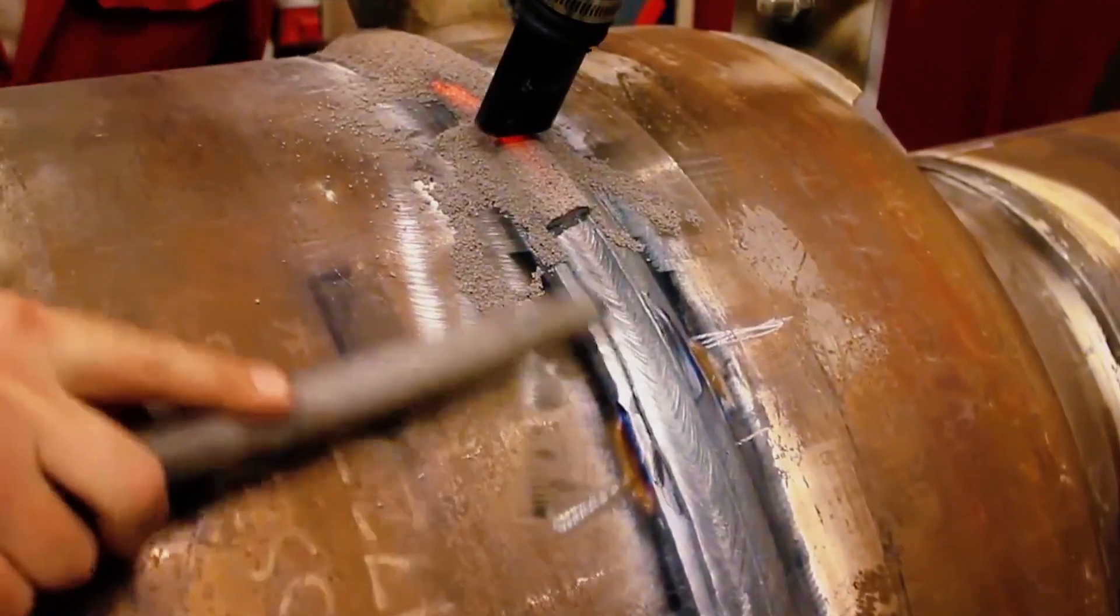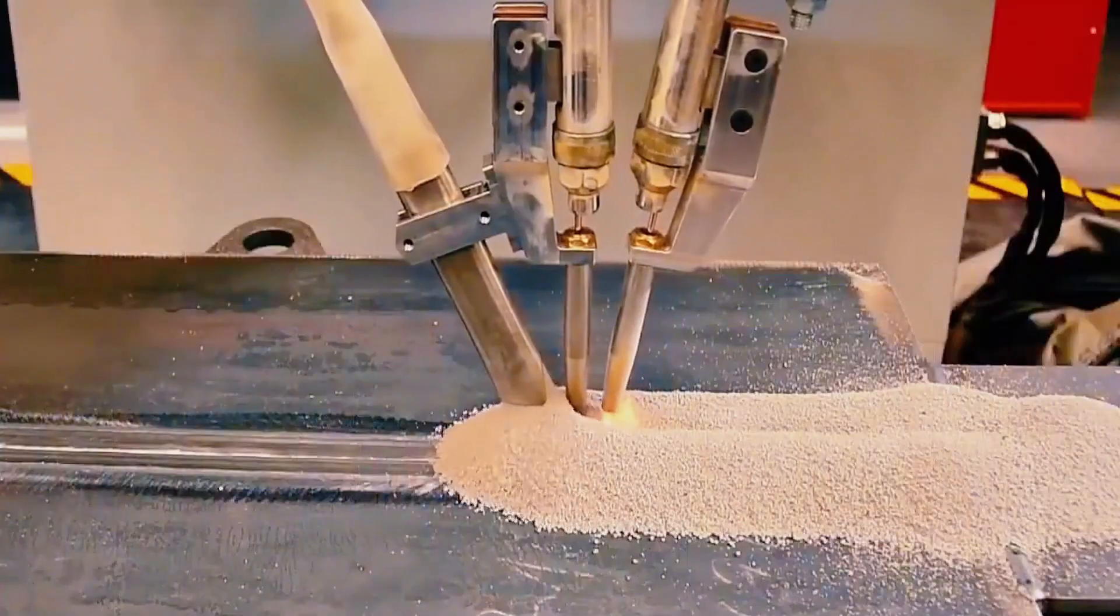Once the excess flux is cleaned off, the welding is completed where needed. Since the process looks like welding in soil, this method is called submerged arc welding.